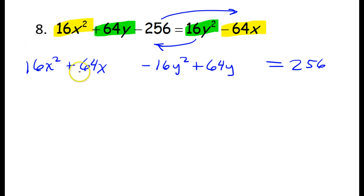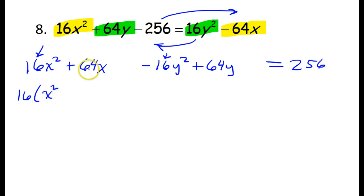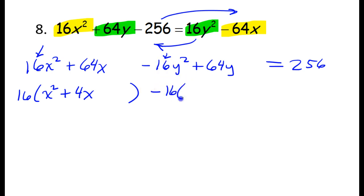Before I can complete the square, I need to pull the coefficients of the squared terms outside of parentheses. I'm going to have 16 outside of parentheses — 64 divided by 16 is 4, so I'll have 4x. Leave space to complete the square. And here I'm pulling out a negative 16 — 64 divided by negative 16 is negative 4y. Leave space to complete the square.